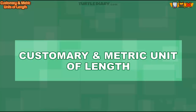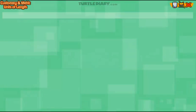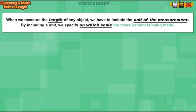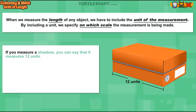Customary and Metric Units of Length. When we measure the length of any object, we have to include the unit of the measurement. By including a unit, we specify on which scale the measurement is being made. If you measure a shoebox, you can say that it measures 12 units.